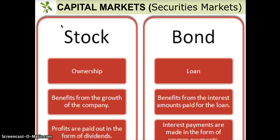There are stock markets all over the world, the most famous of which is probably the New York Stock Exchange down on Wall Street in lower Manhattan. And then there are bond markets all over the world. There are corporate bond markets, where corporations go to borrow money from investors, and there's the U.S. government bond market, where the United States government goes to borrow money from individuals and other entities.